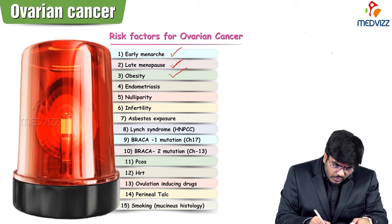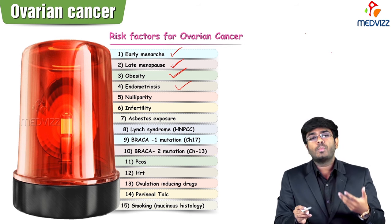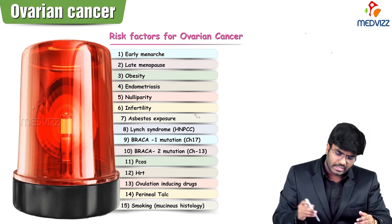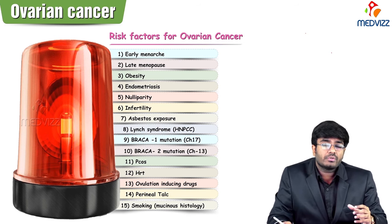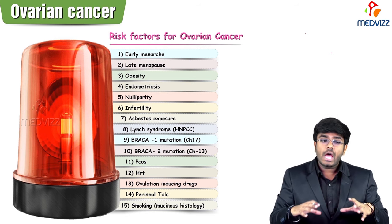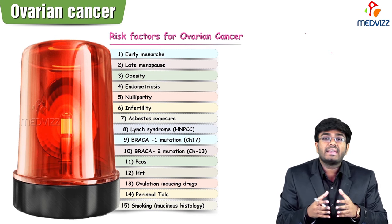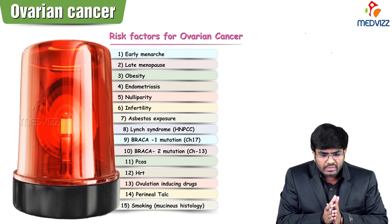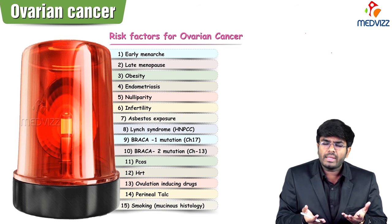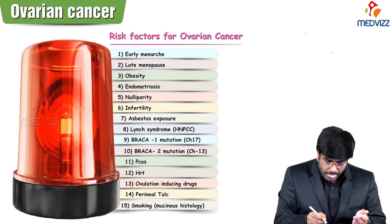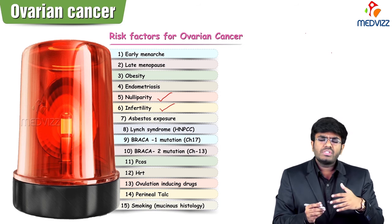Obesity is a risk factor. Endometriosis — associated with a hyperestrogenic state — is also a risk factor. Endometrial deposits fall onto the ovaries and may cause endometroid ovarian cancer. Endometriosis is associated with endometroid ovarian cancer and also with clear cell cancer of the ovary. Nulliparity or infertility is also a risk factor.